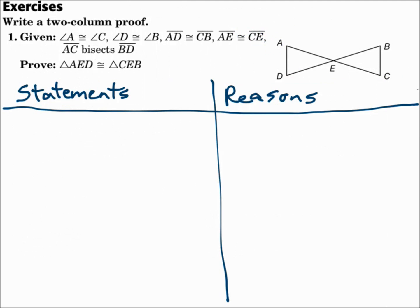Write a two-column proof. Given: angle A is congruent to angle C, angle D is congruent to angle B, segment AD is congruent to segment CB, segment AE is congruent to segment CE, and segment AC bisects segment BD. Prove that triangle AED is congruent to triangle CEB. The goal is to prove that the triangles are congruent, so I need to show that all three pairs of angles are congruent and all three pairs of sides are congruent.